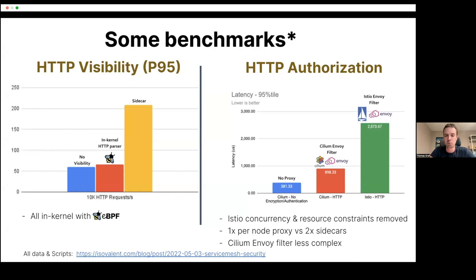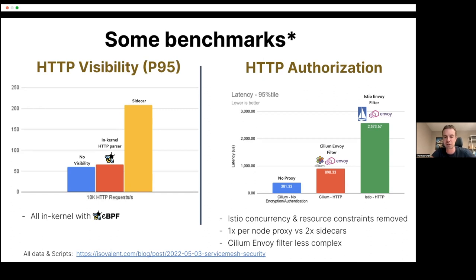Looking at some benchmarks: the difference is really significant when offering raw HTTP visibility. This is a P95 measurement. Blue on the left is no visibility — just raw TCP latency. Red is the eBPF-based HTTP parser, and yellow is two sidecars. The real cost is going from a pure TCP connection with passive parsing to actually terminating connections, splitting a single connection into three, and running two proxies. The cost is really the introduction of the proxy, not necessarily the proxy itself.